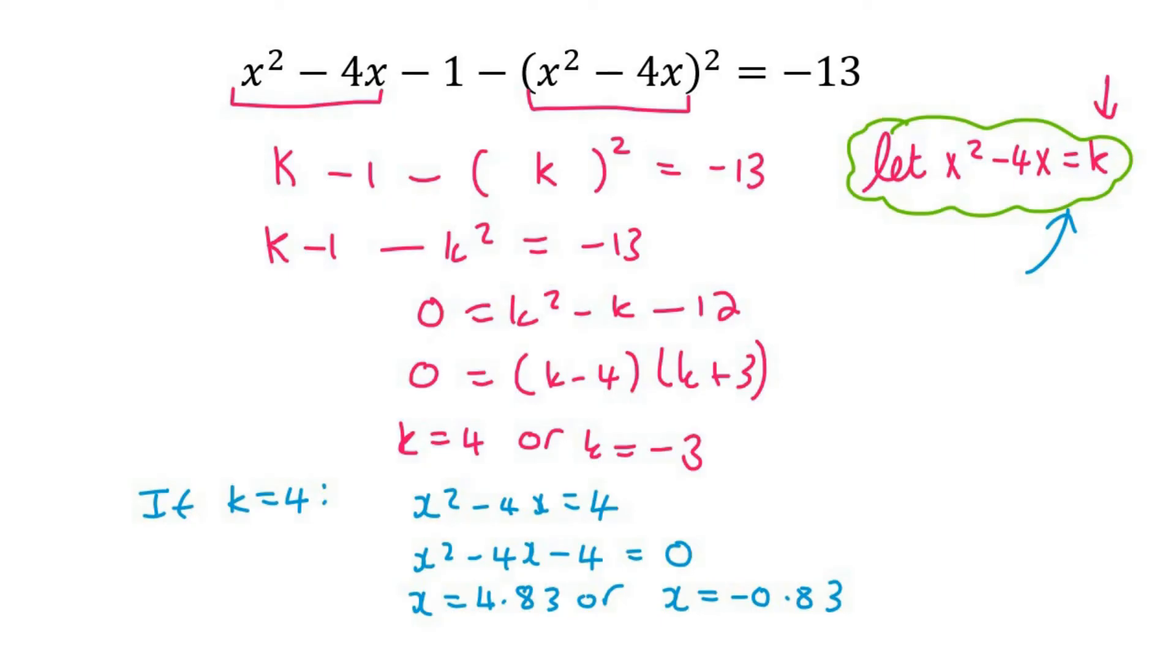Now we need to do this again, but now we're using our other k answer, which is -3. So I'll squeeze that in here. If k equals -3, then we start the process again like that.